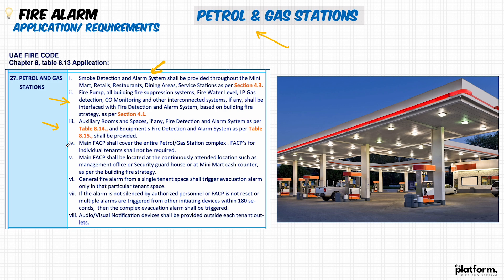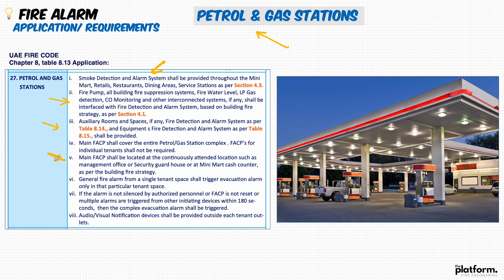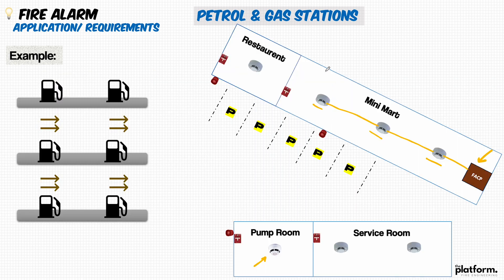The main controller shall cover the entire petrol station, so individual fire alarm control panels for each tenant area are not required. We don't need a separate fire alarm control panel for the restaurant or each individual area — a master panel or one main controller can control all areas via a fire alarm loop covering the entire station. The panel location shall be in an attended location like the management office or security guard house. A general fire alarm from a single tenant space shall trigger evacuation alarm only in that particular tenant space, without affecting the other retails.